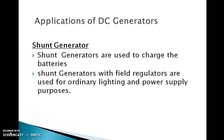Shunt generators with field regulators are used for ordinary lighting and power supply purposes. They are also used for charging batteries because their terminal voltage is almost constant or can be kept constant.